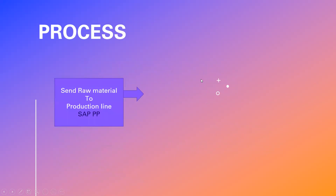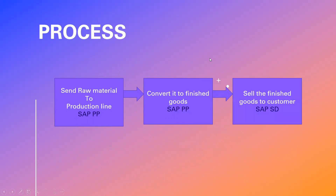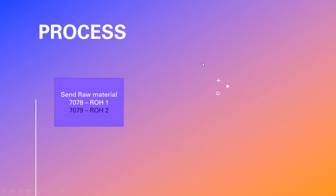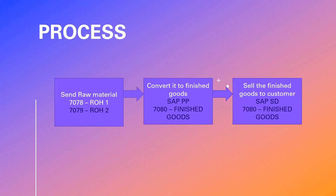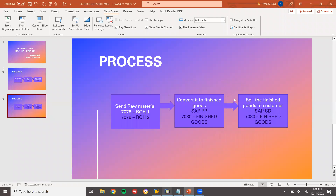I'm going to send the raw material to the production line, convert it to finished goods, and sell it to the customer. The raw materials are 7078 and 7079. I'm going to convert those into finished goods 7080, and then sell it to the customer by creating a sales order, doing delivery and billing.